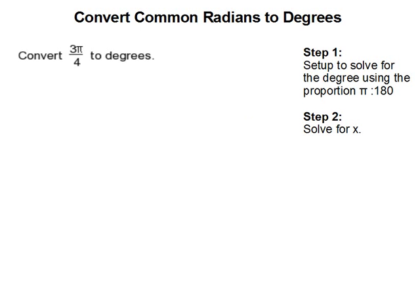Convert common radians to degrees. In this problem, we are going to convert 3 pi over 4 to degrees.